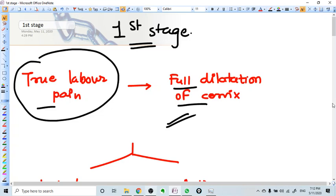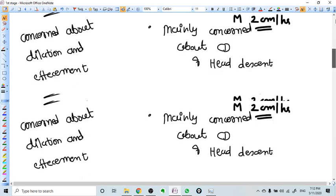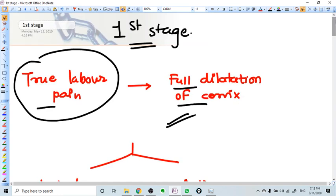In this video we are going to talk about the first stage of labor. The first stage of labor starts with true labor pains and ends with full cervical dilatation, which means 10 centimeters of dilatation.